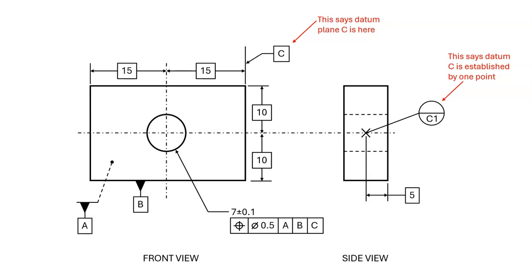The datum C symbol here in the front view with the arrow indicates that this is where datum plane C is. The side view says that datum plane C is established by a single point, and the front view tells us where the datum plane is in the front view.